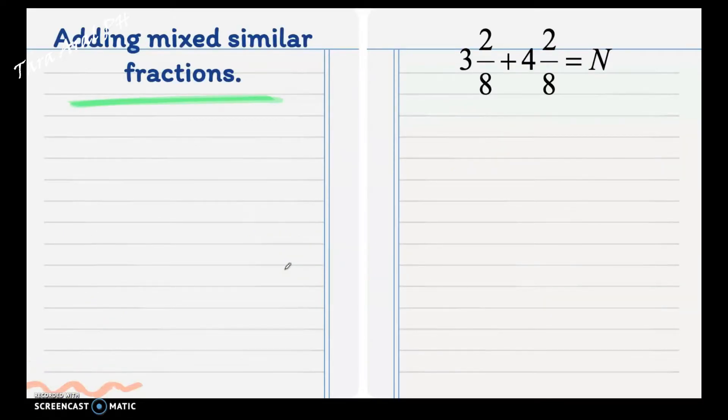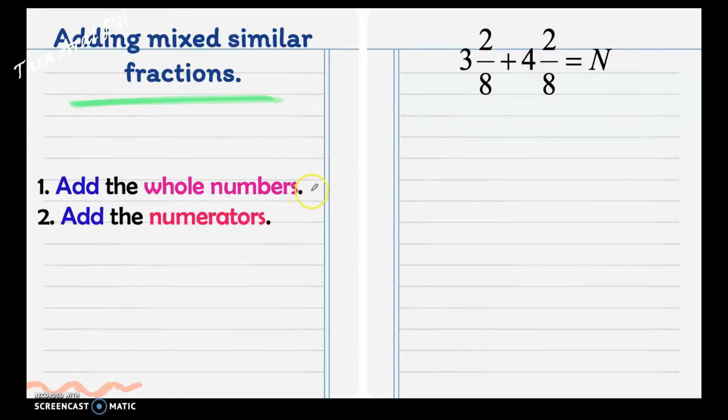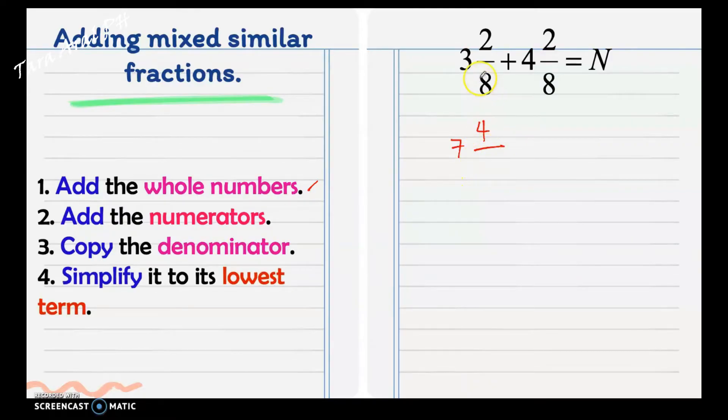Adding mixed similar fractions. When you say mixed fractions, that means there is a whole number and a fraction. So, the steps are: first, add the whole numbers. We have 3 plus 4, that is 7. Add the numerators, which is 2 plus 2 is 4. Then, copy the denominator, which is 8. Then, simplify to its lowest term.